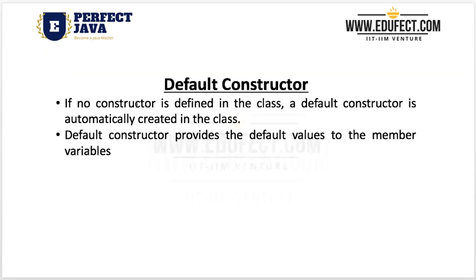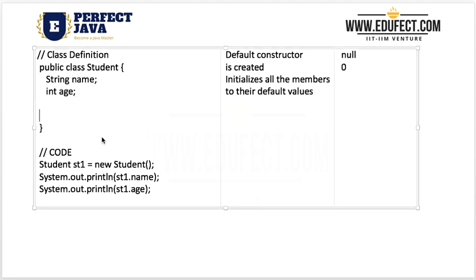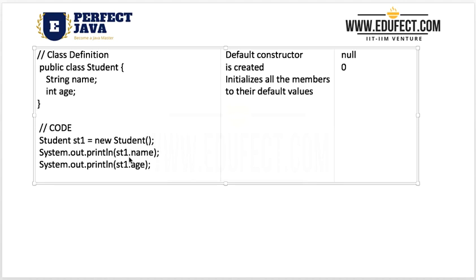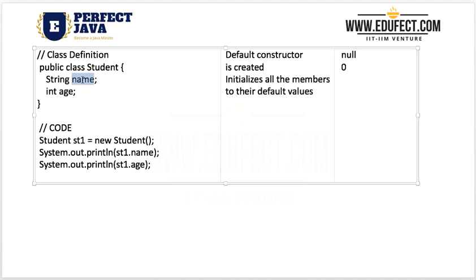If no constructor is defined in the class, a default constructor is automatically added. One way to look at it is that an empty 'Student()' constructor body is added automatically. The default constructor provides the default values to all member variables — null for String and 0 for int.